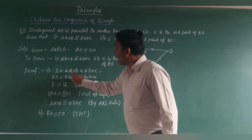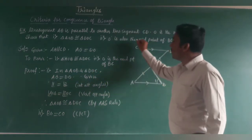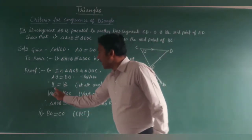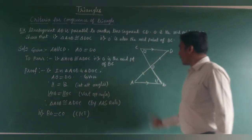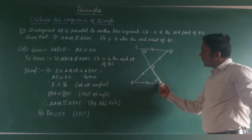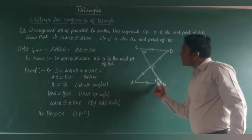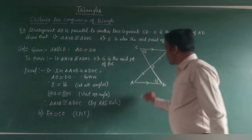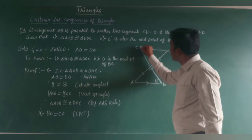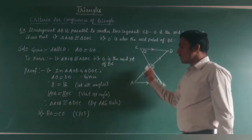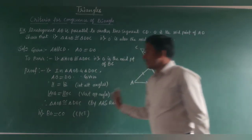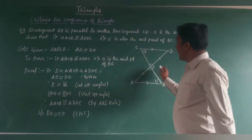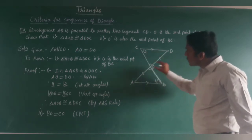In triangles AOB and DOC: AO = DO (given). Angle 1 = angle 2 because AB is parallel to CD, so these are alternate interior angles. Angle AOB = angle DOC because these are vertically opposite angles. Therefore, by the AAS congruence rule, triangle AOB is congruent to triangle DOC.